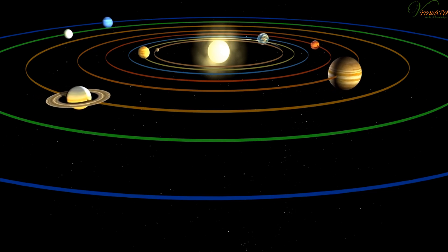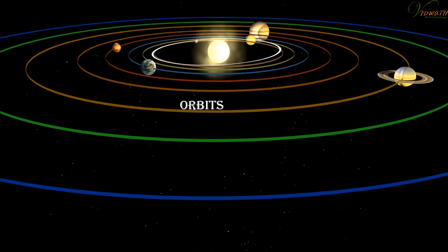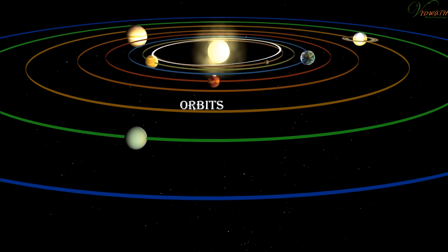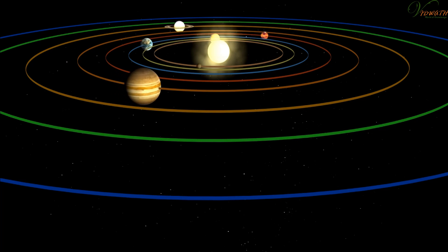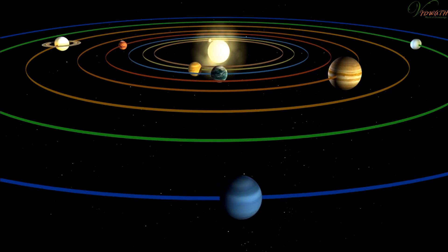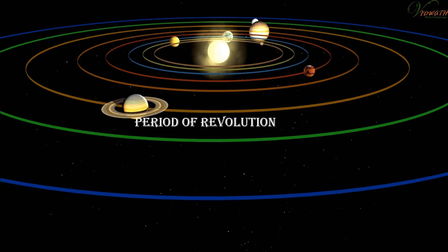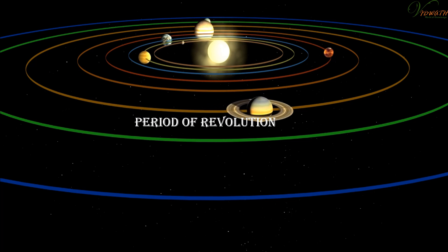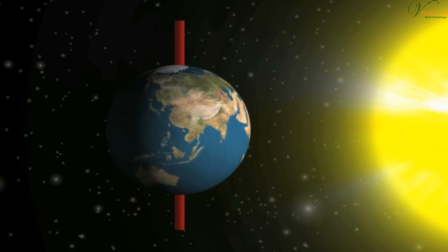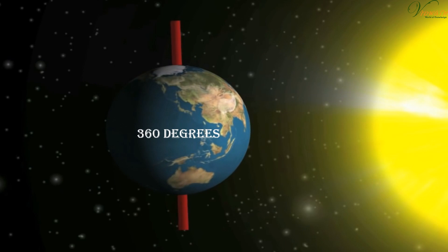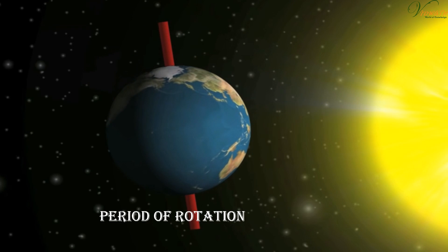Planets have definite paths called orbits in which they revolve around the Sun. The time taken by a planet to complete one full revolution around the Sun is called its period of revolution. The time taken by a planet to rotate a full 360 degrees on its axis is called its period of rotation.